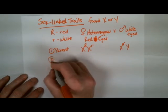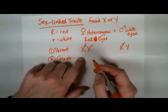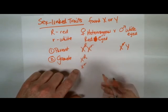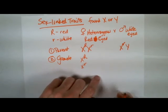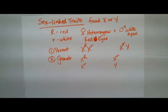Step two is the gametes. What are the gametes going to be produced here for the female? Well, X big R and X little r. Those are the two possibilities. For the male, X little r and Y. Those are the two possibilities there.